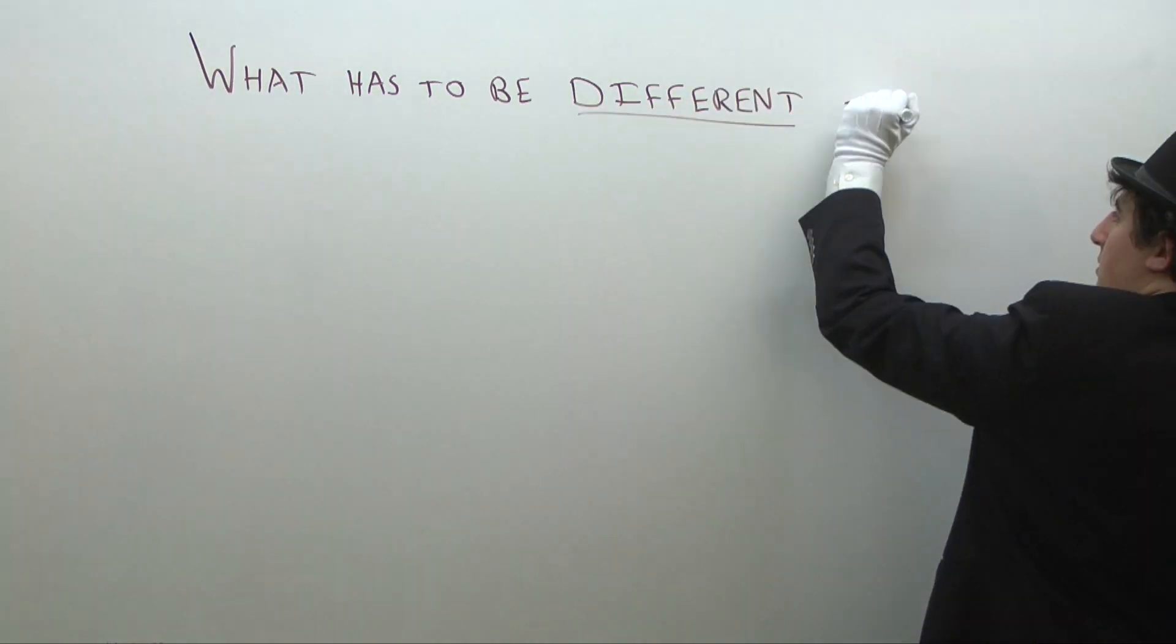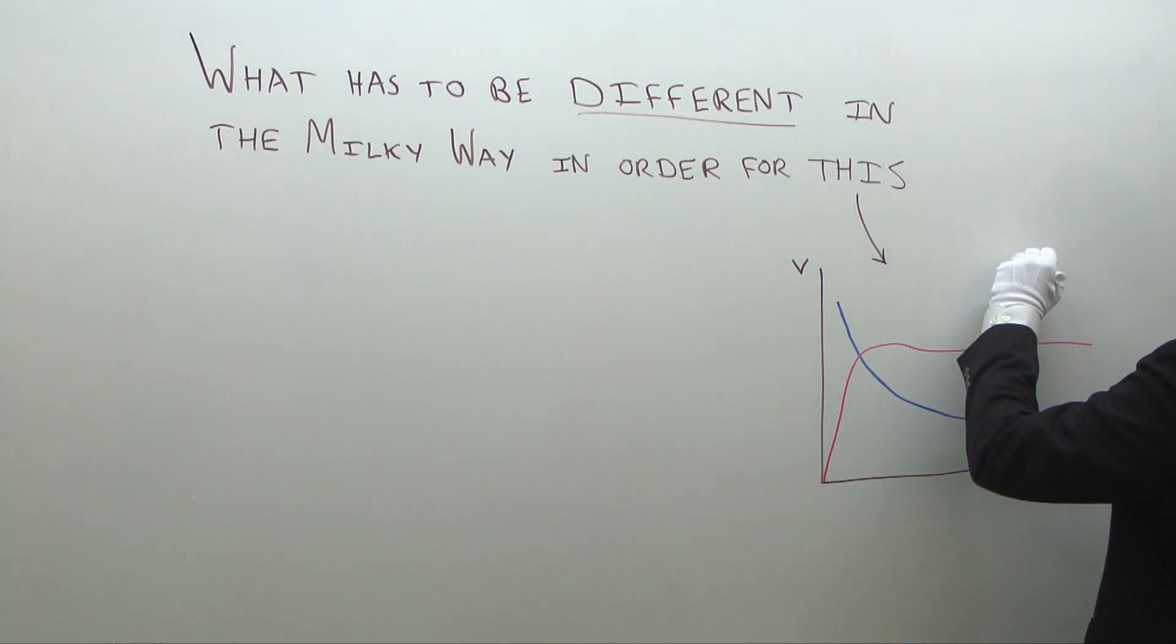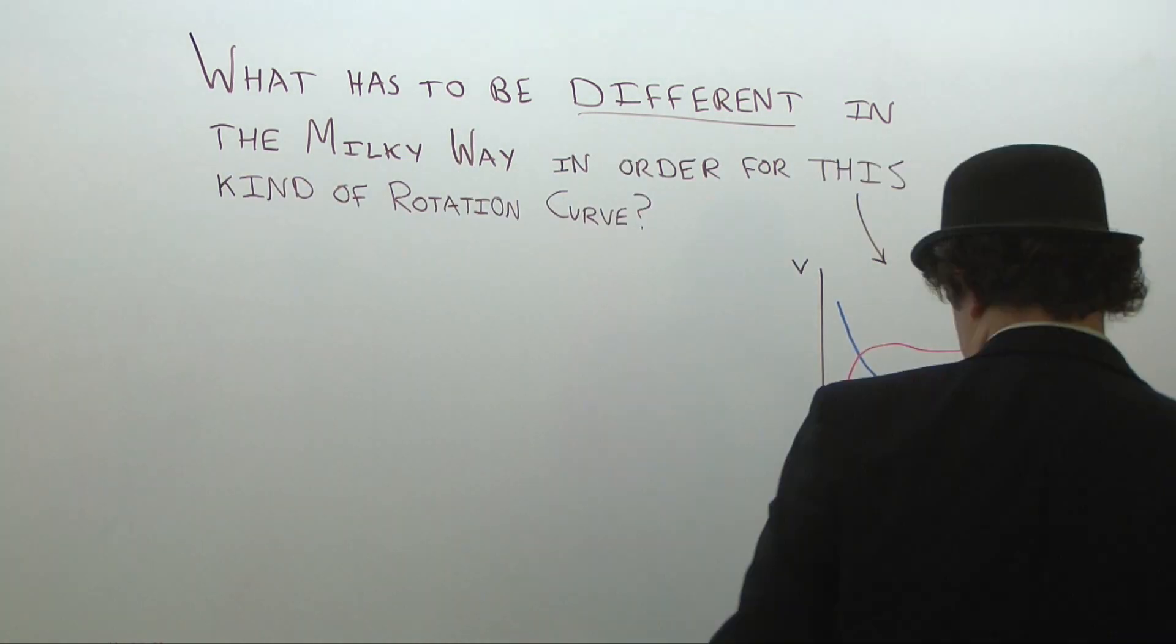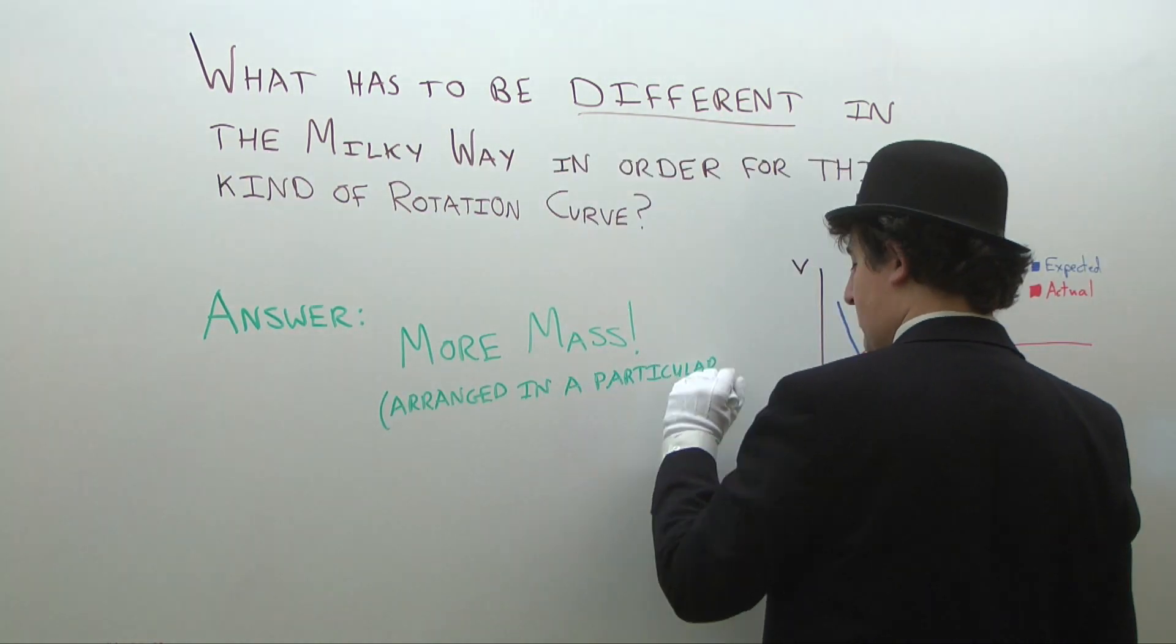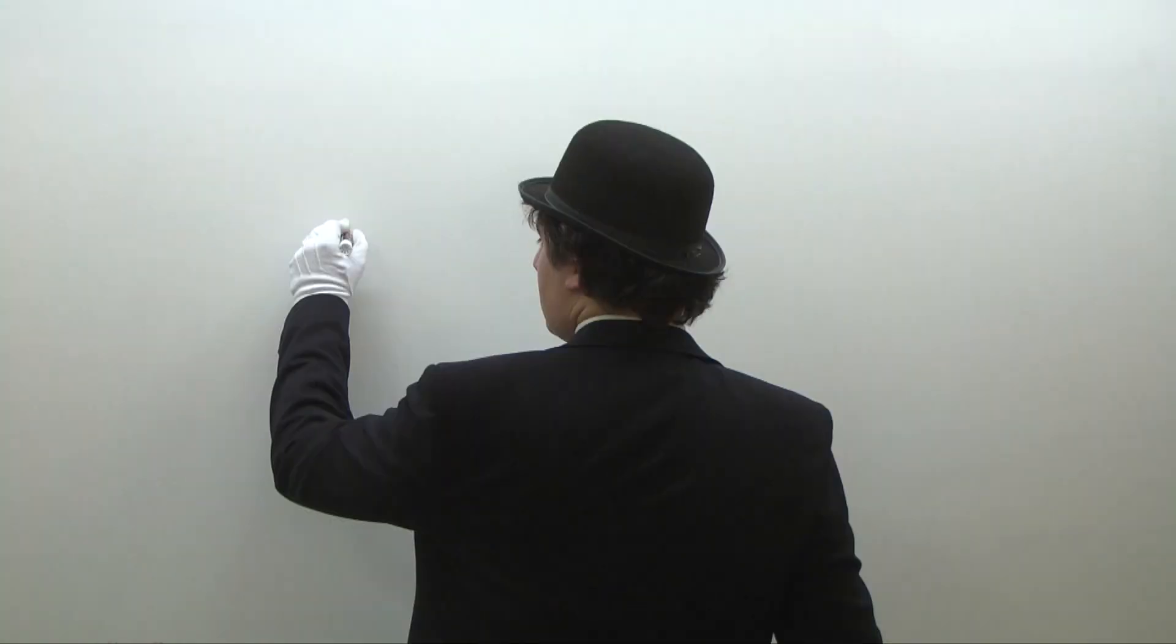We can also try flipping our reasoning and asking, what would have to be different about our galaxy in order to see this kind of rotation curve? It turns out that you expect exactly this kind of curve if the galaxy has a lot more stuff in it in a particular arrangement. But when we look out where this stuff should be, we don't see anything.